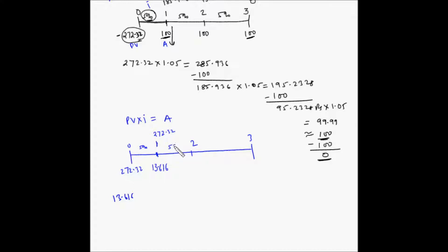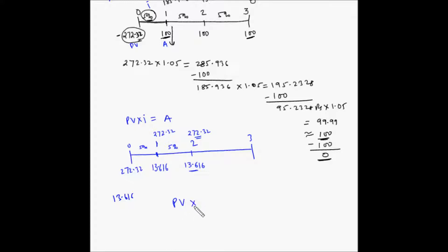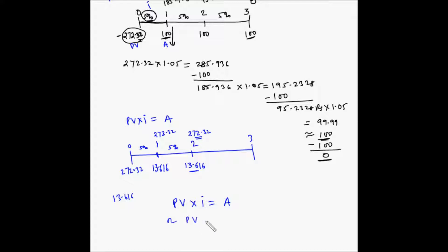Then again for the second year, the bank accumulates 5% interest on 272.32 and pays out only the interest gained. The payout is the same, and the bank again has 272.32 rupees. The bank can continue giving this payout for an infinitely long period because the original amount never diminishes. This is a case of perpetuity, and the present value of a perpetuity multiplied by the interest rate equals the annuity amount — so PV equals A divided by I.